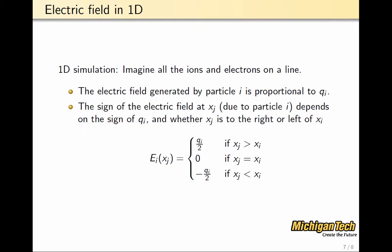So, what we're going to tackle today is a 1D simulation where we imagine that all of the ions and electrons are on a line. The electric field generated by particle i is proportional to its charge, qi. The sign of the electric field at some other location, xj, due to particle i depends on the sign of qi, but also whether the point xj is to the left or to the right of xi.